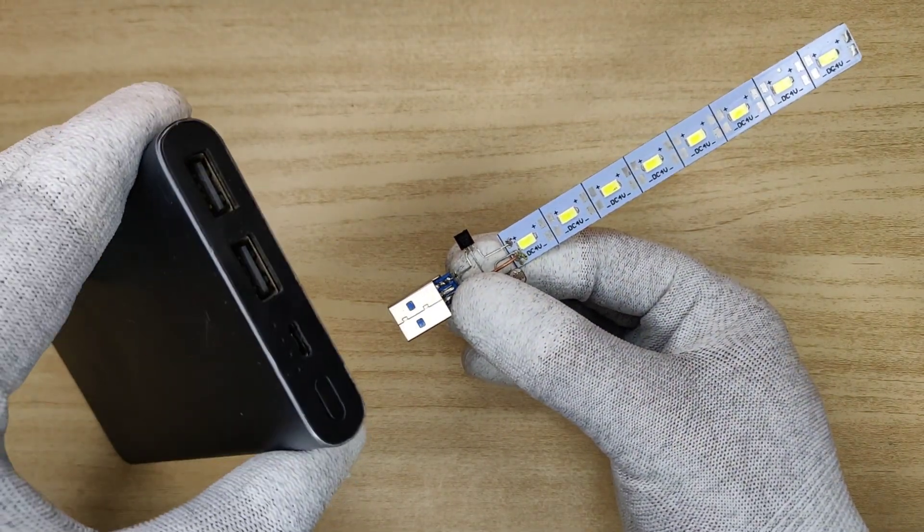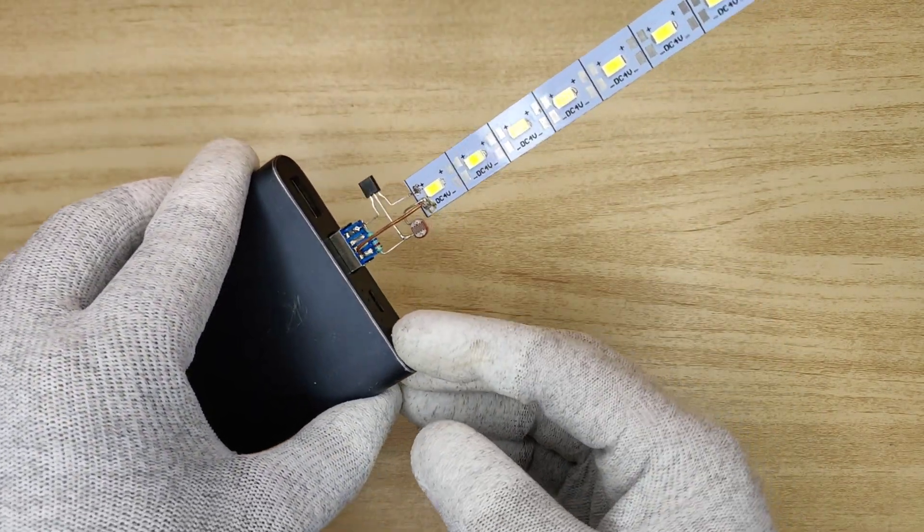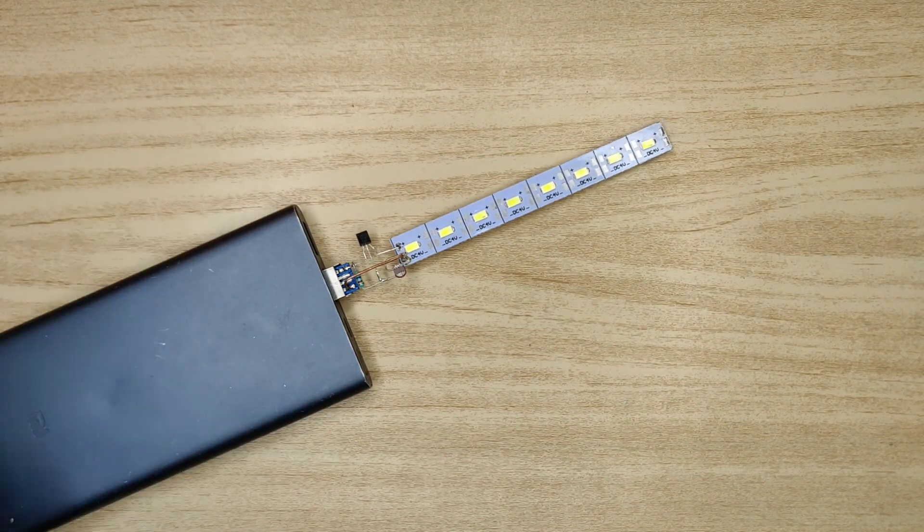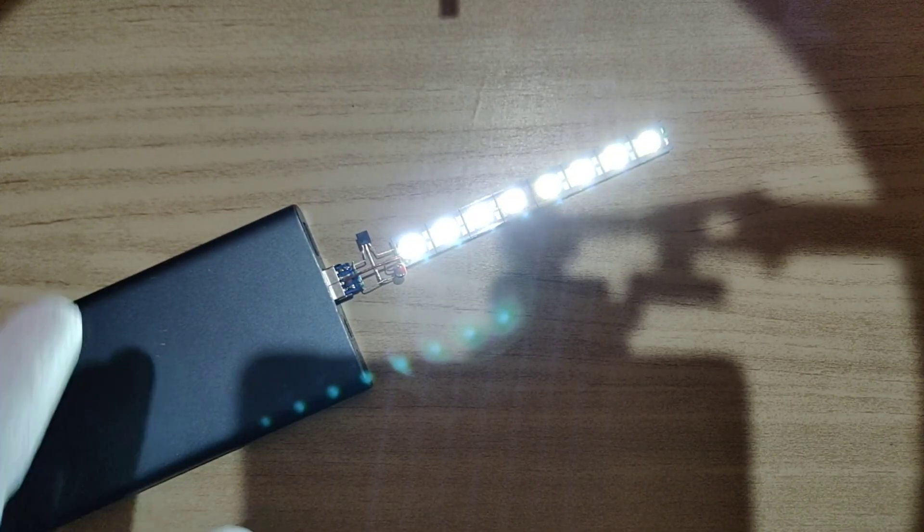I will use this power bank to supply 5 volts to circuit. As you can see, when I turn light off, the circuit turns on automatically.